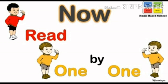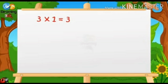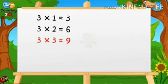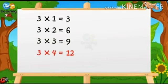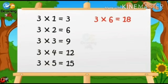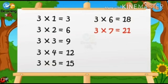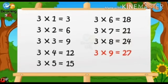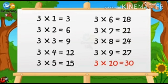Now read 1 by 1. 3 1s are 3, 3 2s are 6, 3 3s are 9, 3 4s are 12, 3 5s are 15, 3 6s are 18, 3 7s are 21, 3 8s are 24, 3 9s are 27, 3 10s are 30.